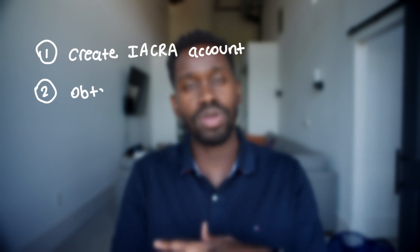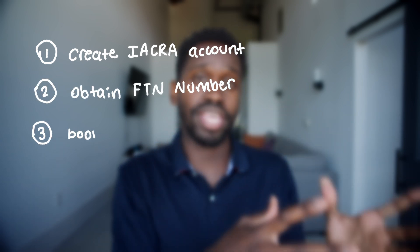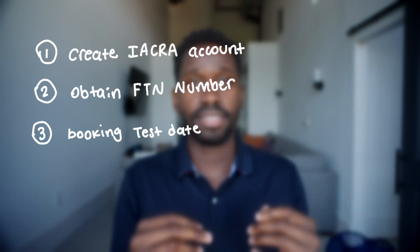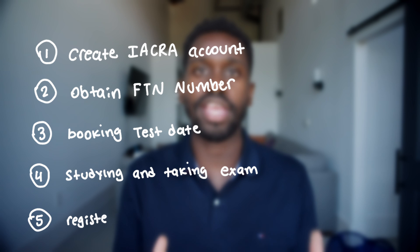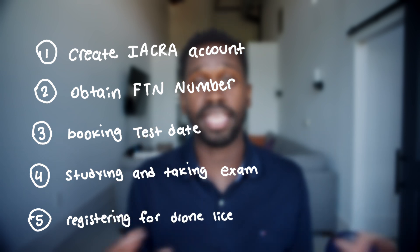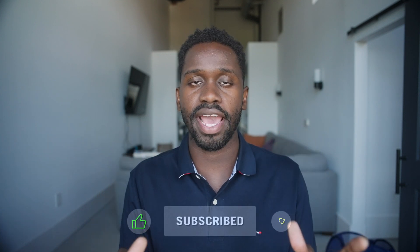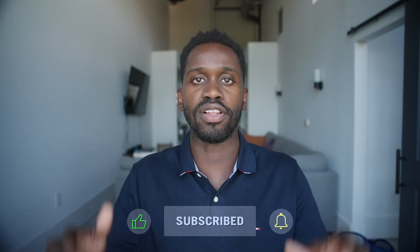Getting your FAA drone license in 2024 — let's go. We're going to go into five simple steps that will show you from beginning to end how to get your drone license. Step one is creating an account with the IACRA. Step two is getting your FTN number. Step three is booking the date for your exam. Step four is studying for and taking your exam. And step five is registering with your new exam number to get your FAA drone pilot license card. Don't worry about the process — I'm going to walk you through all of it and it's going to be super simple.